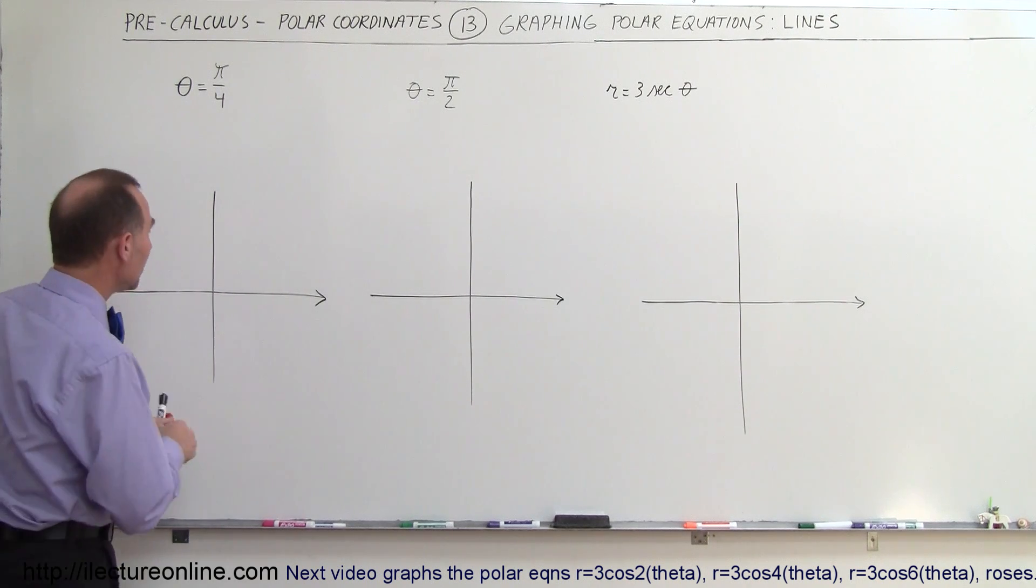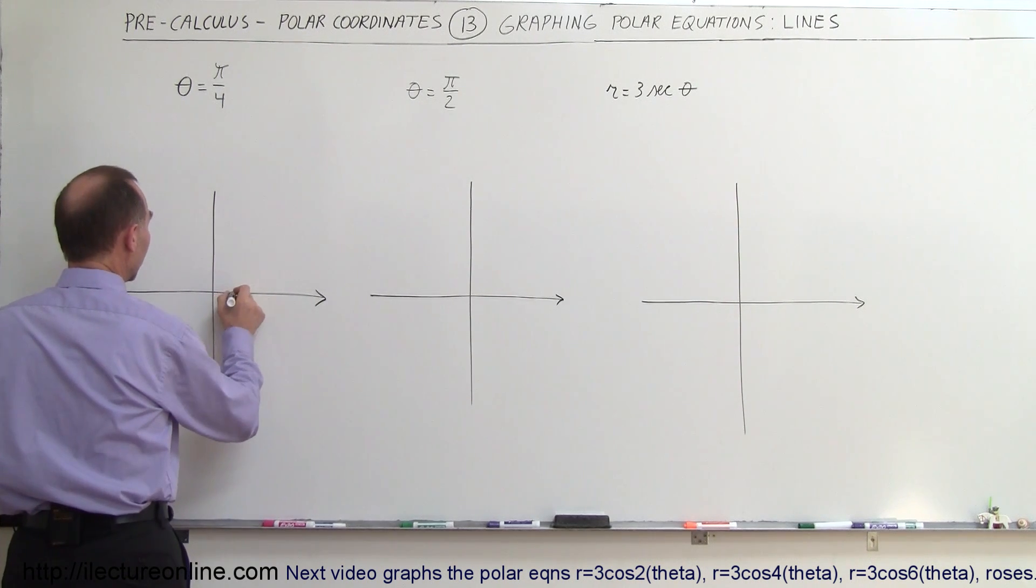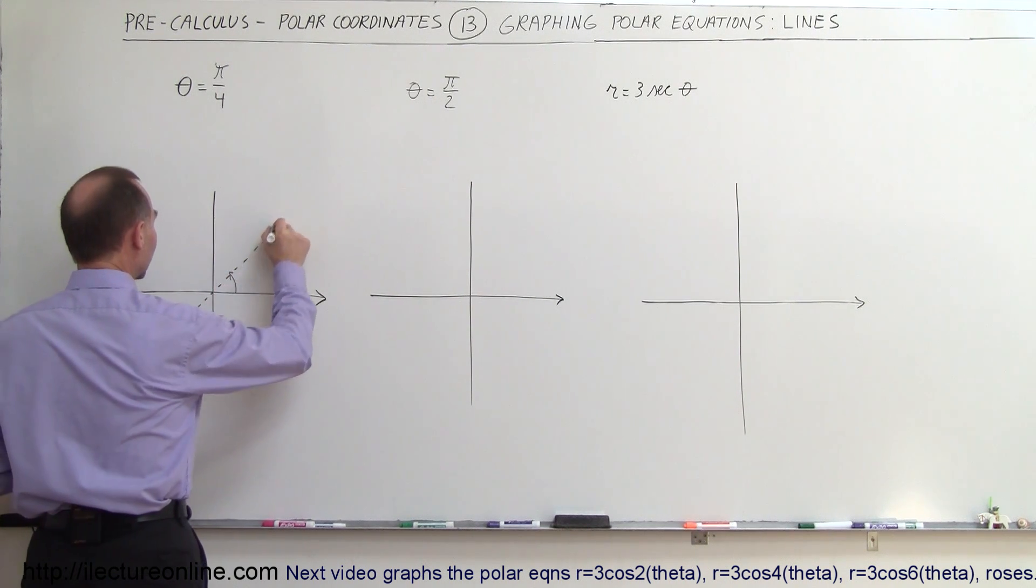That 45 degree angle is an angle 45 degrees relative to the positive x-axis like that. So that means that theta equals pi over 4 is simply a line along this direction right here.